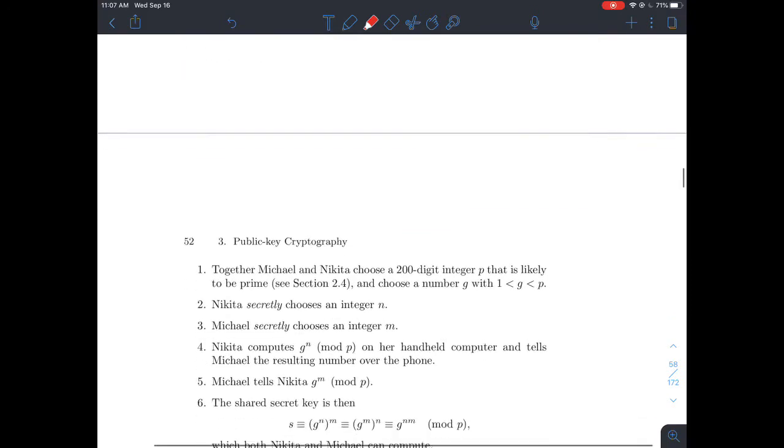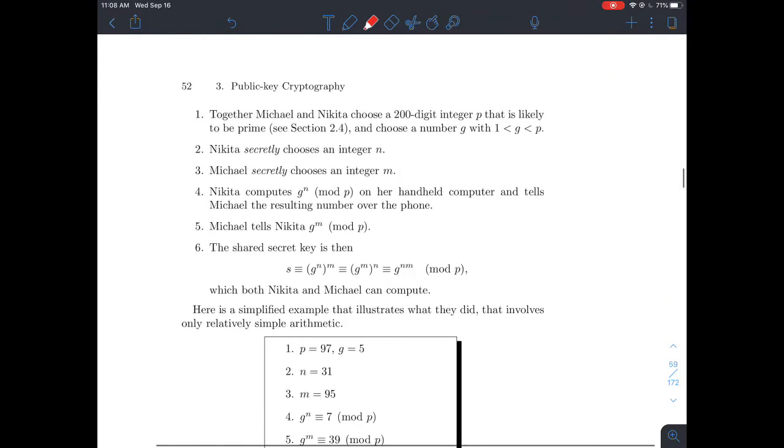But what if we change it to the following? This is the idea of Diffie-Hellman. Here's what they're going to do instead. Here's a better idea for Michael and Nikita. They're both going to pick a very big number P that's prime, or that's likely prime anyway. And they'll pick another G that's between 1 and P. Nikita's going to secretly pick an N, and Michael's going to secretly choose an M. And again, only Nikita knows this, and only Michael knows M.